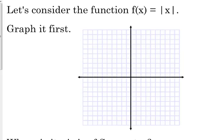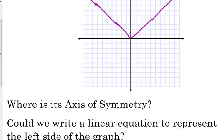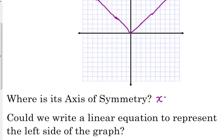The absolute value of x has a vertex at the origin. The right side has a slope of positive 1, and the left side has a slope of negative 1. You could also plot specific points, whatever method you prefer. The axis of symmetry is x equals 0, which is the y-axis.